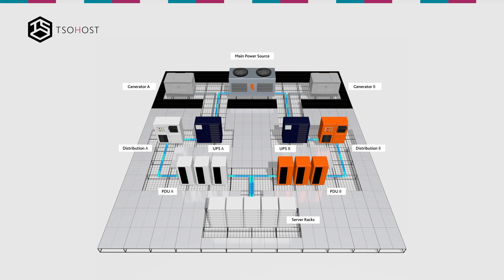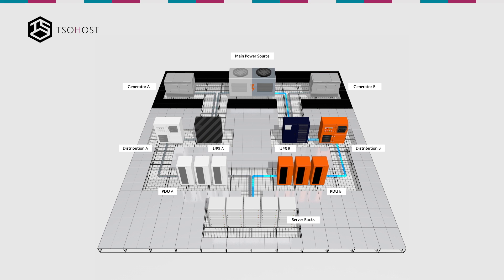This is our standard mains failover test which we perform monthly to ensure all backup systems operate correctly without human intervention. Our data center has 2N redundant mains distribution with an A and a B side. Each server has two power feeds, one from each side, so that we can survive an entire failure of one side with no loss of service. In the test, we test each side individually.